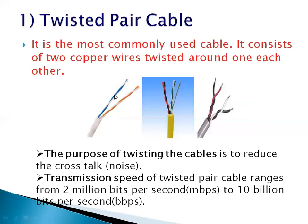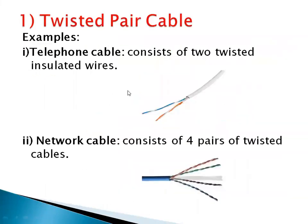During a landline call, you have sometimes heard the noise or sound of a third person — this is called crosstalk. The transmission speed of twisted pair cable ranges from 2 million bits per second to 10 billion bits per second. Examples include telephone cable, which consists of two twisted insulated wires, and network cable, which consists of four twisted pairs of wires.